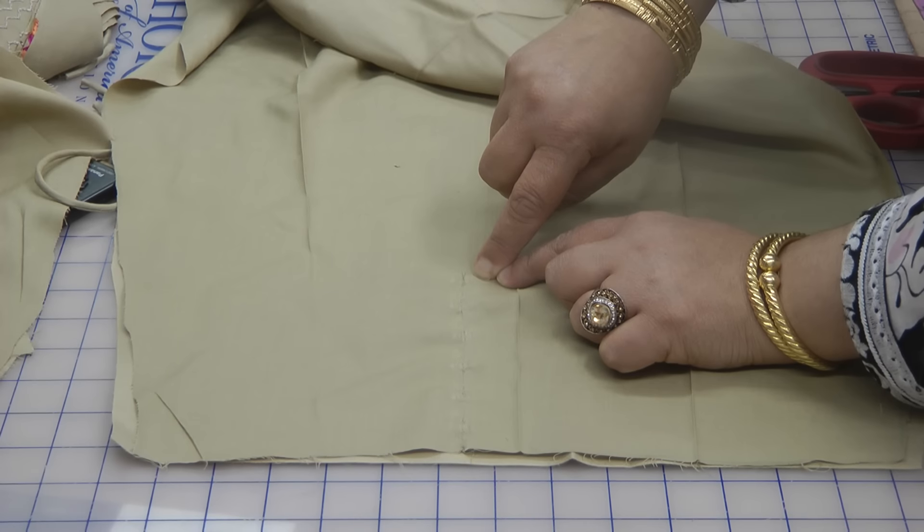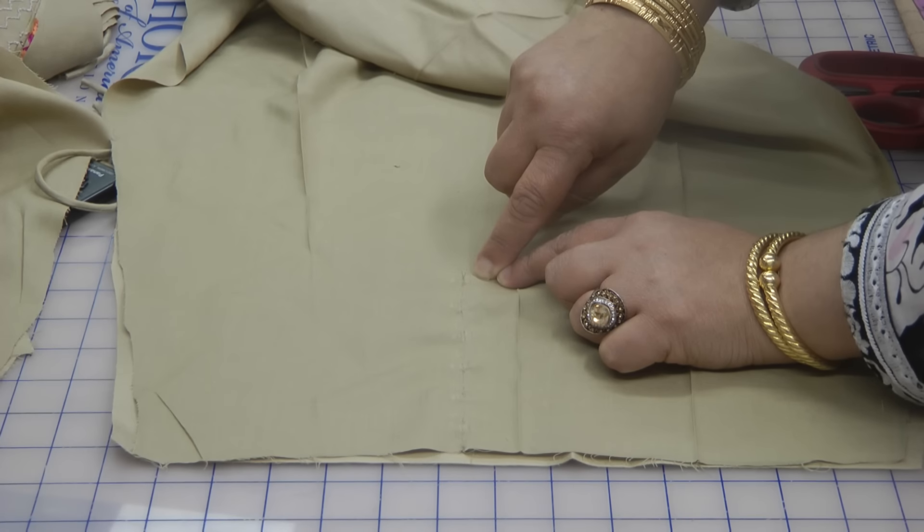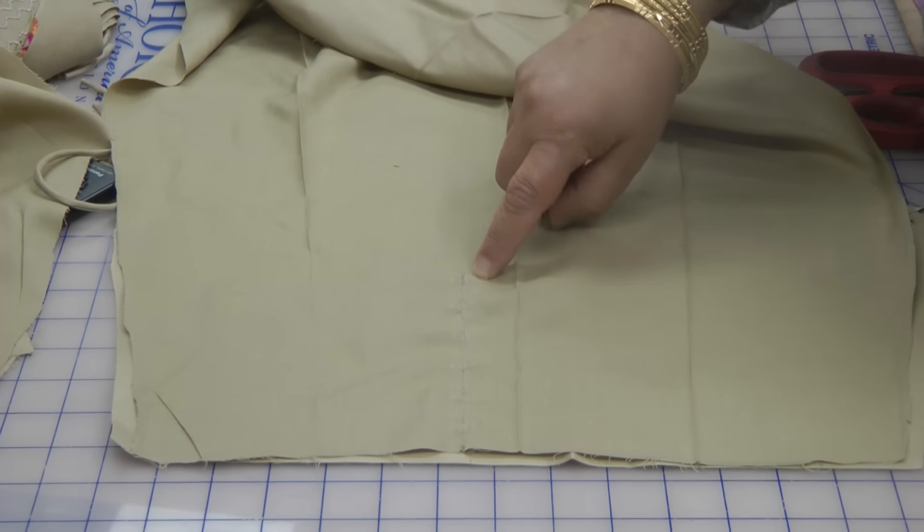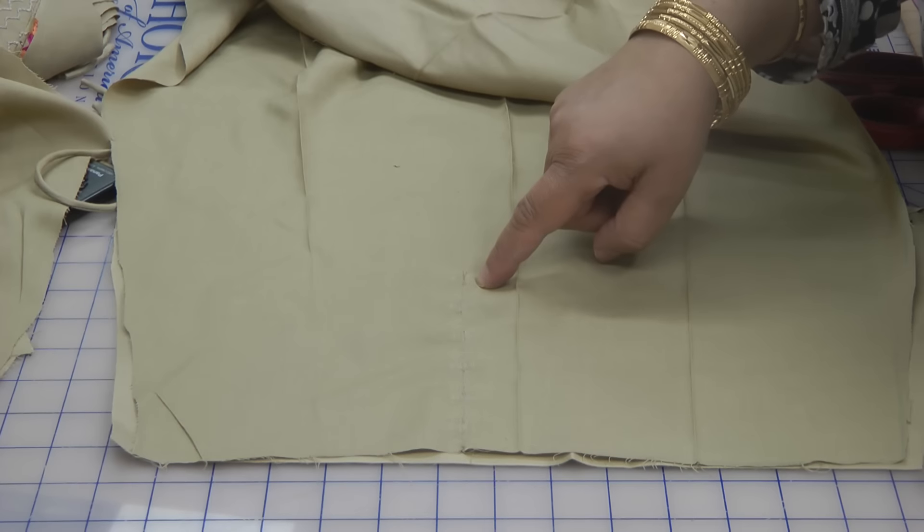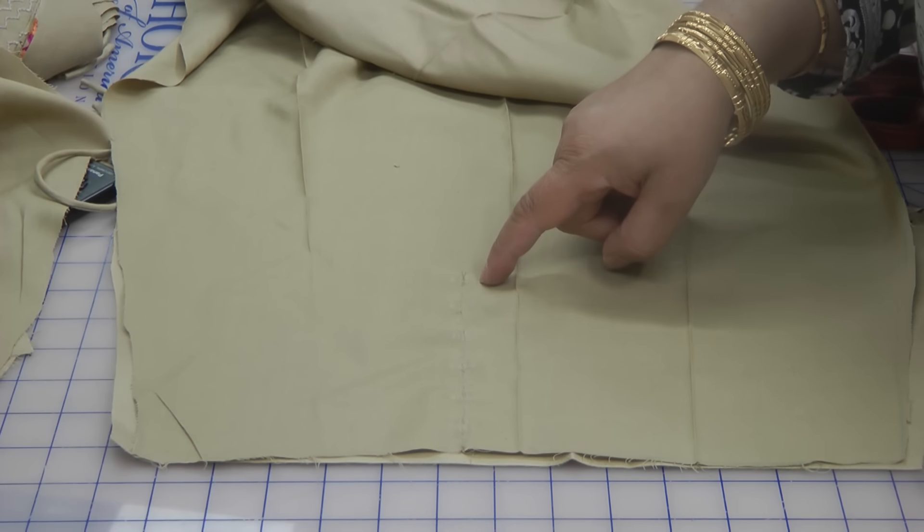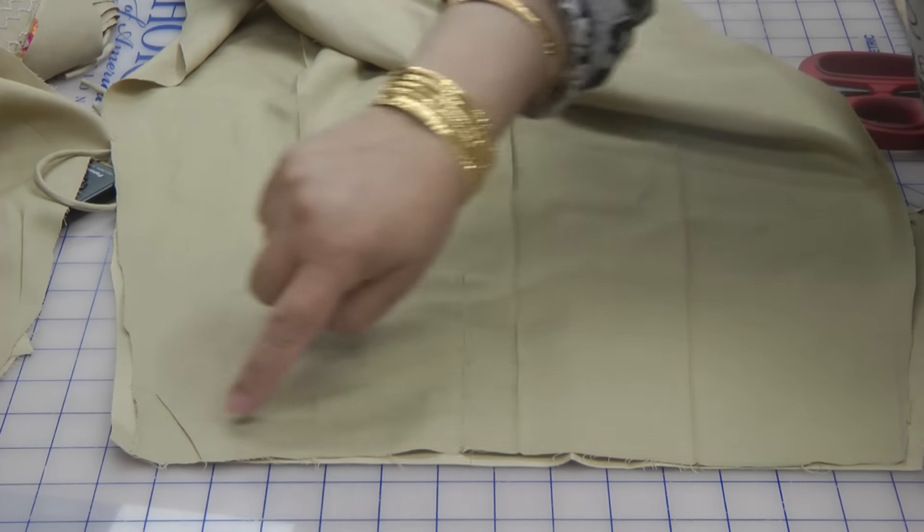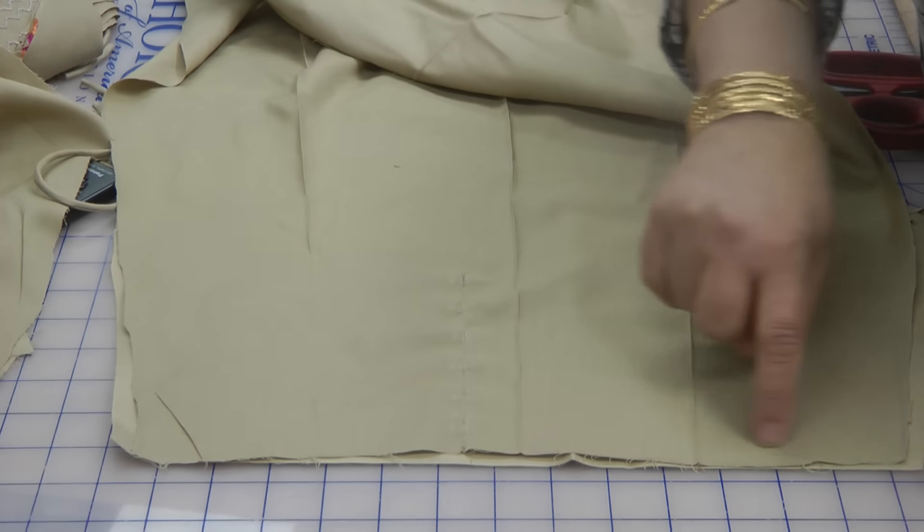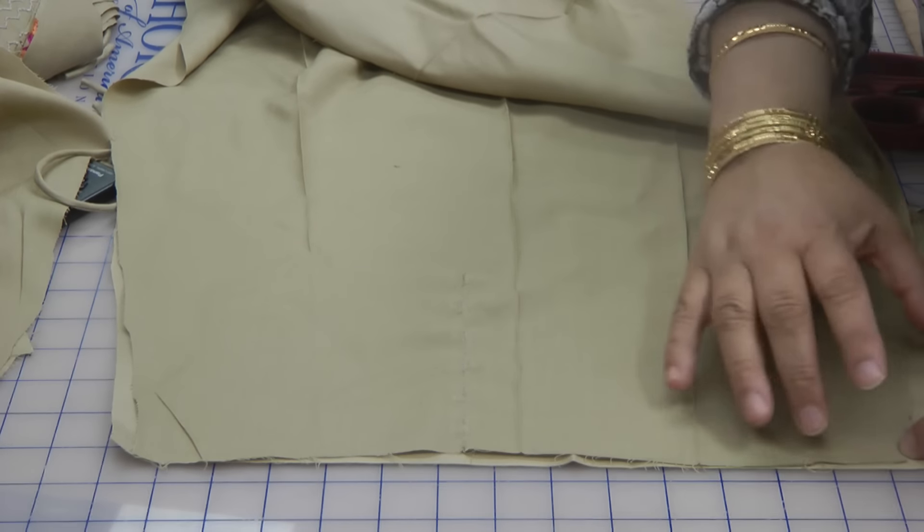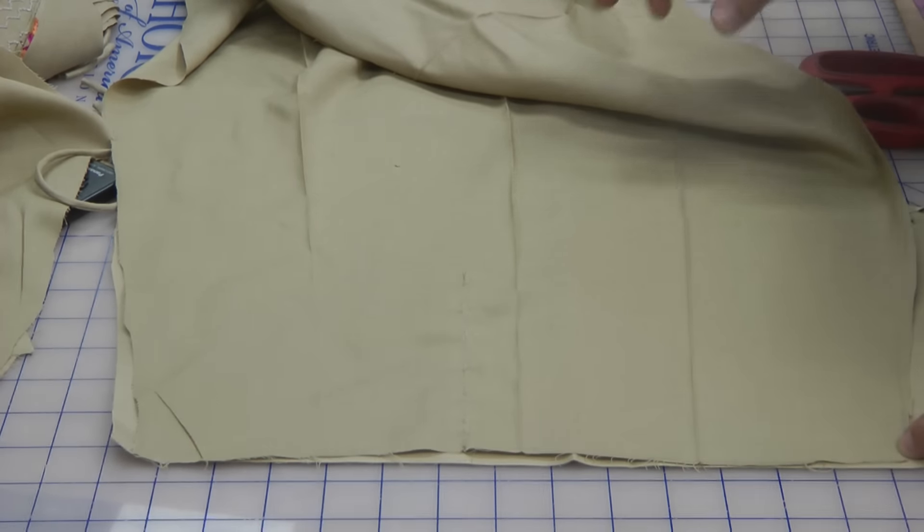Then we're going to leave a small amount of space here, about half a centimeter. On the equal amount, we're going to go down to the point where we went across, then go towards the other side to create the pattern.